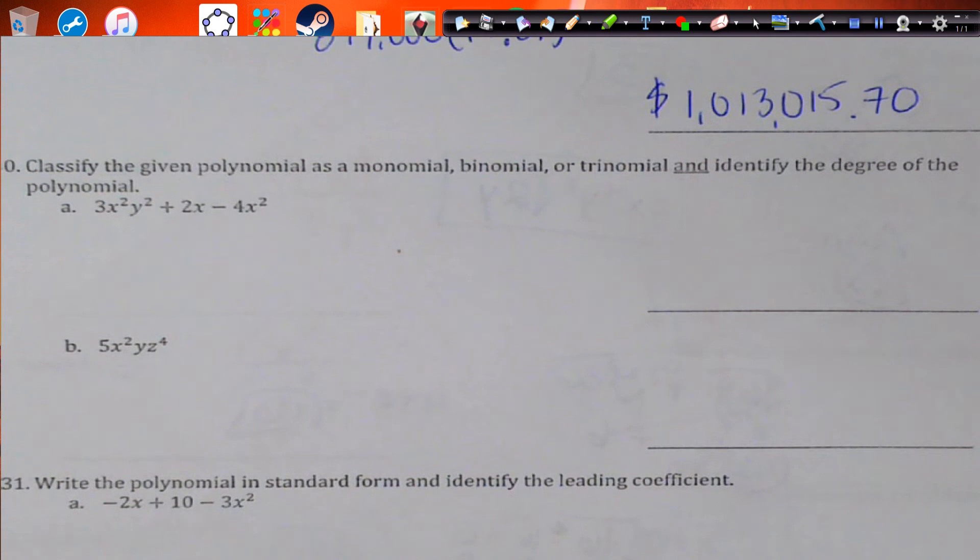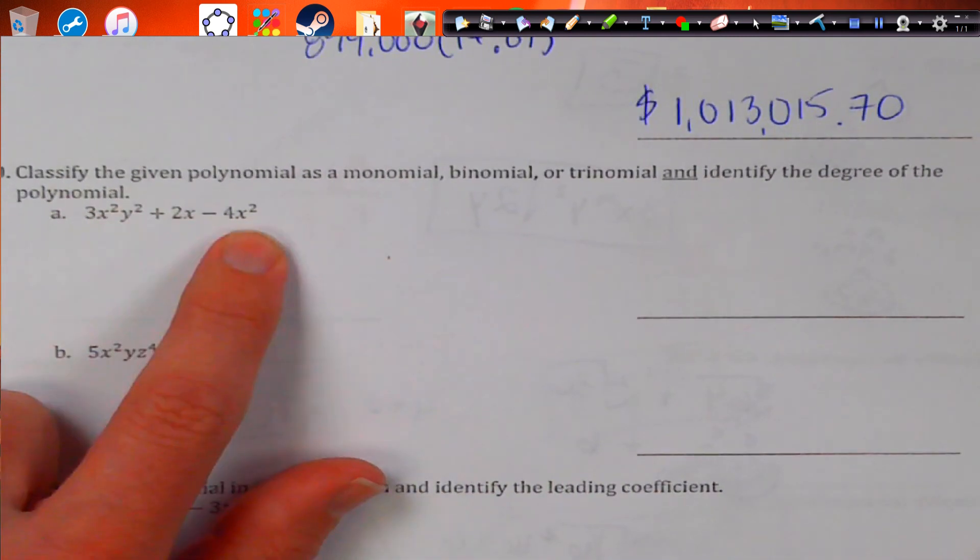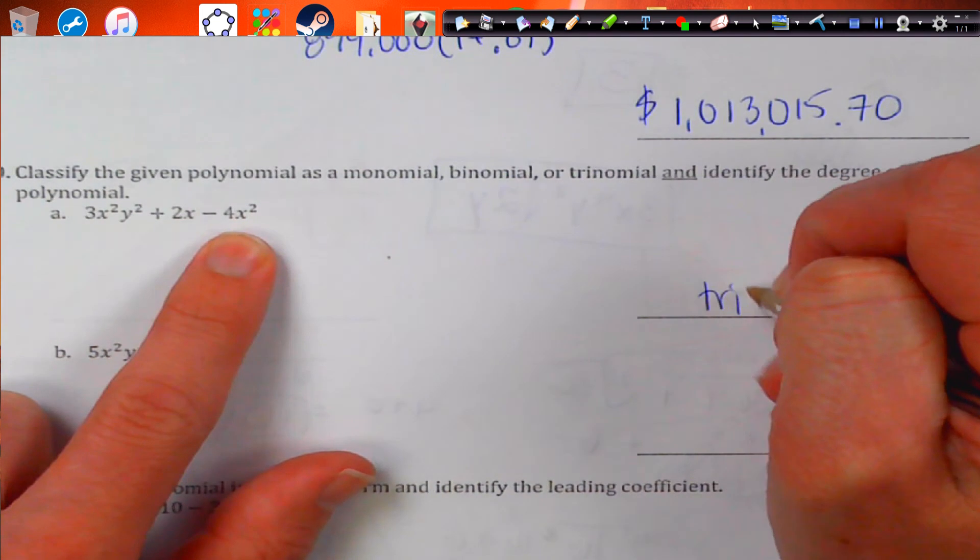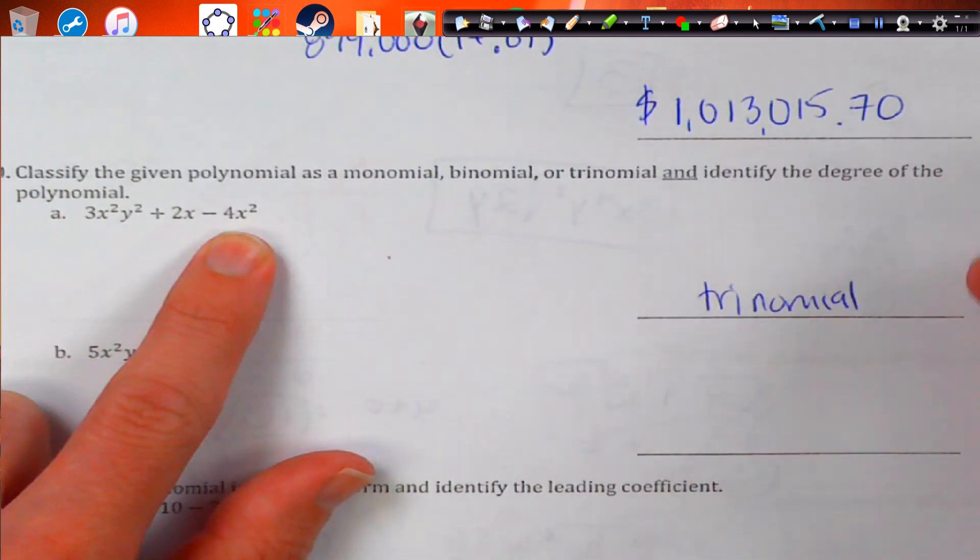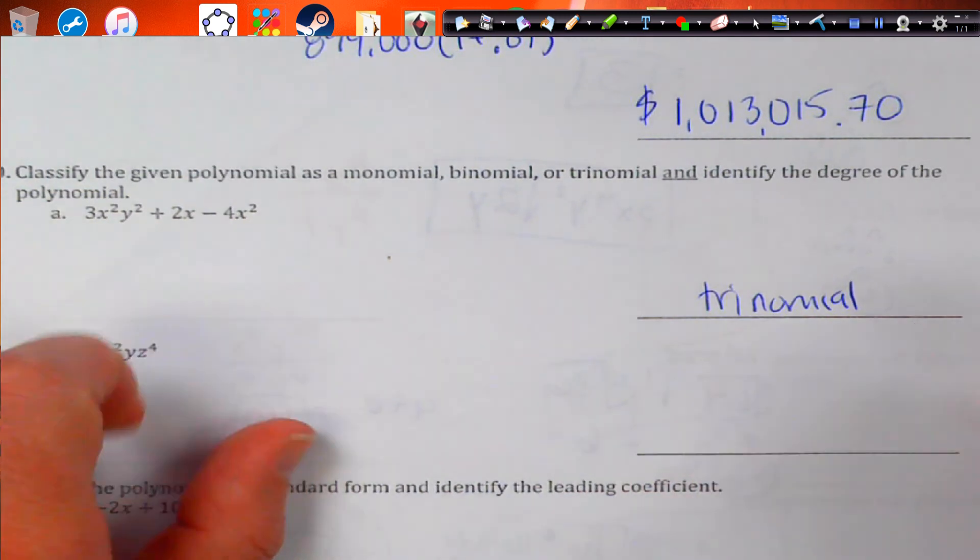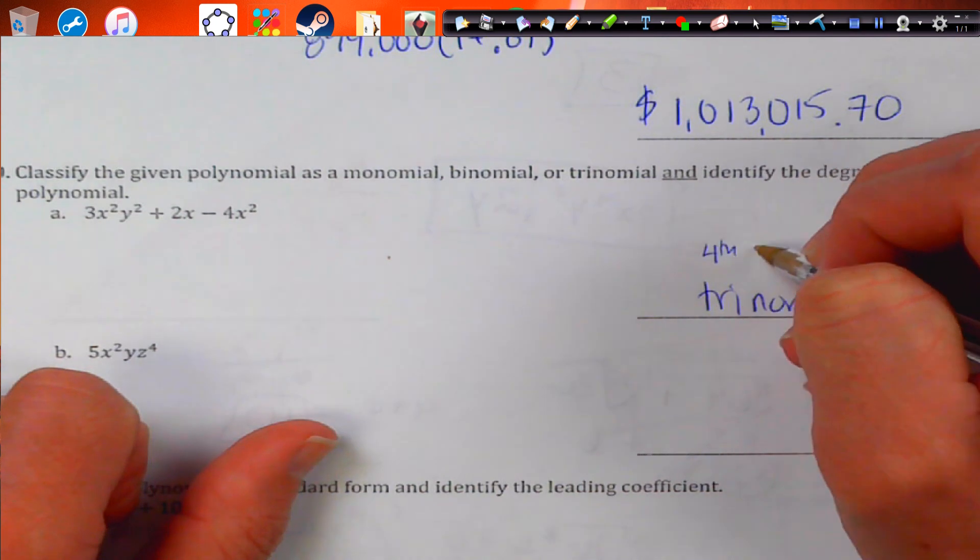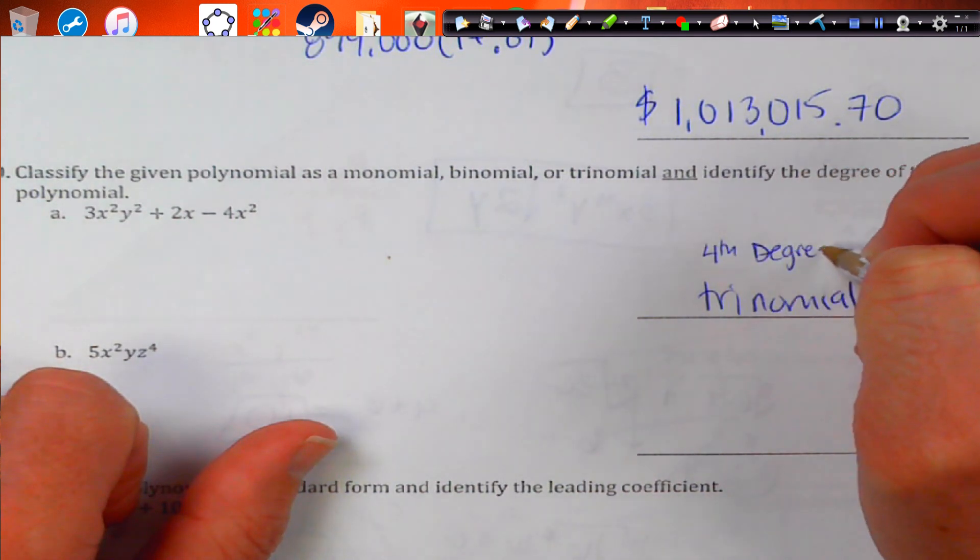Classify the following as monomial, binomial, or trinomial and identify the degree. I have one, two, three terms. So it's a trinomial. And the highest degree is, this one has 4, 1, and 2. So this is going to be a 4th degree trinomial.